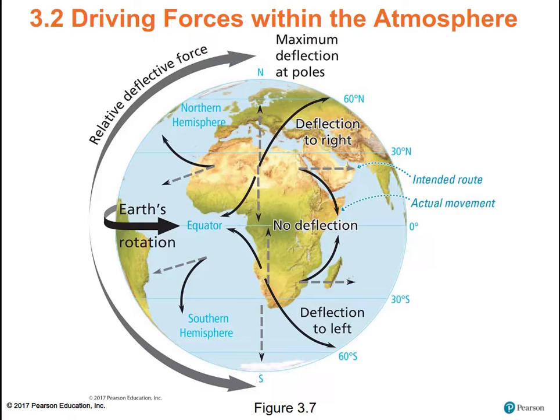We can see an example of objects in the northern hemisphere deflecting to their right, and objects in the southern hemisphere deflecting to their left. That's going to set up the pattern of ocean circulation and the pattern of hurricanes in the northern hemisphere and cyclones in the southern hemisphere.